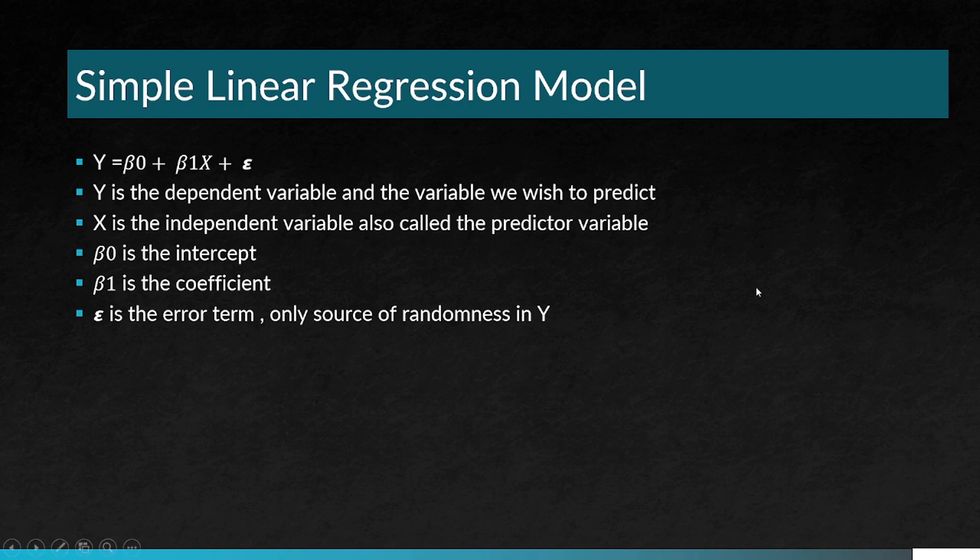The simple linear regression - we have all studied in high school this concept of a line where Y is equal to mx plus c. Here I have made it beta 0 plus beta 1x plus epsilon. Y is a dependent variable and the variable we wish to predict. X is an independent variable, also called the predictor variable. Beta 0 is the intercept, beta 1 is the coefficient, and epsilon is the error term, the only source of randomness in Y.